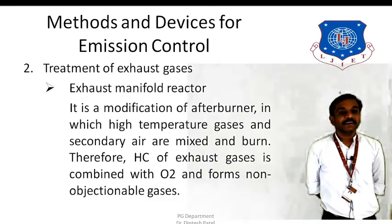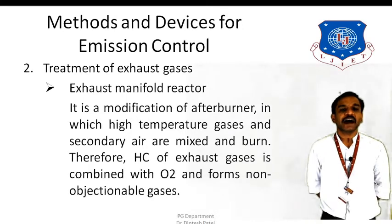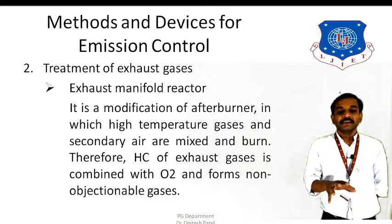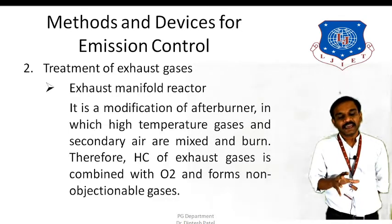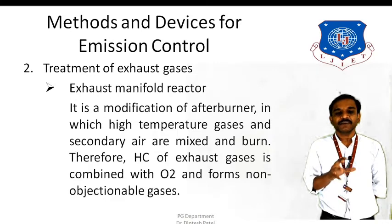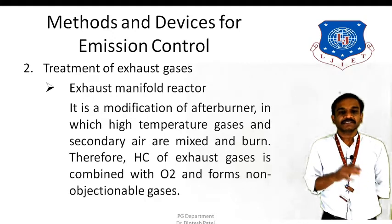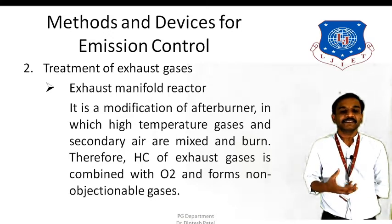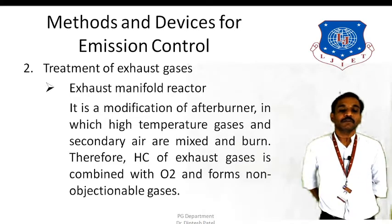The next one is the exhaust manifold reactor. The exhaust manifold reactor is also a modified version of the afterburner, in which we supply secondary air to the exhaust gases and those gases are burned with the help of the secondary air. Since it has a certain amount of chemical energy, we can supply a good amount of oxygen to mix with these chemicals and ignite it again. Overall, the excess emissions can be reduced and converted into certain non-objectionable gases.